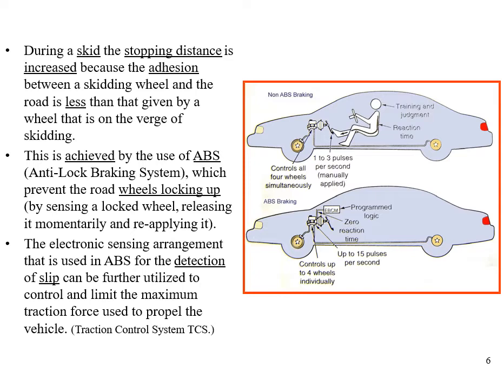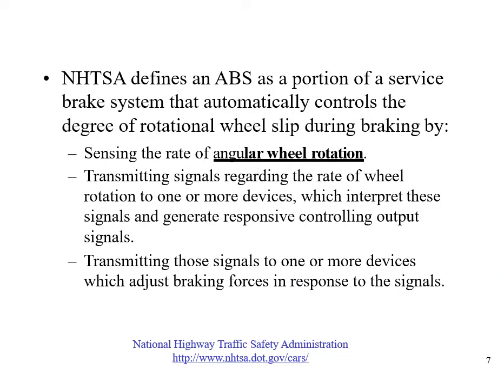The electronic sensing arrangements used in ABS for detection of slip can further be utilized to control and limit the maximum traction force used to propel the vehicle — we call this the traction control system. The National Highway Traffic Safety Administration defines the anti-lock braking system as a portion of a service brake that automatically controls the degree of rotational wheel slip during braking by: sensing the rate of angular wheel rotation, transmitting signals to devices which interpret these signals and generate responsive control output signals, and transmitting those signals to devices which adjust the braking force in response.